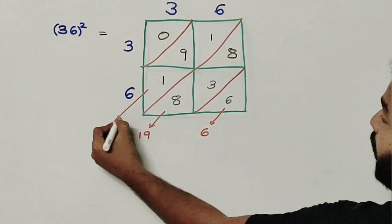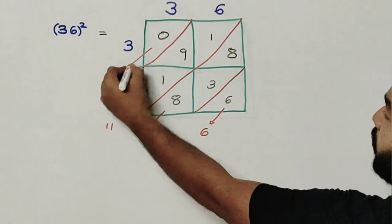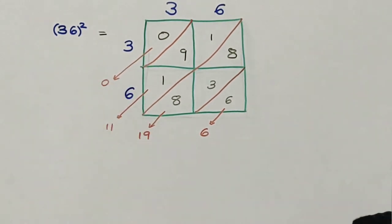The next diagonal has 1 plus 9 plus 1 which makes it 11. And the last one has 0 in it.